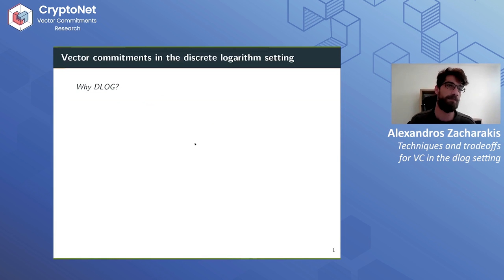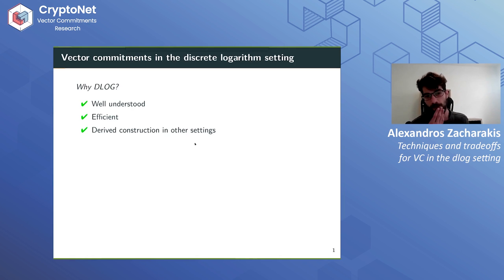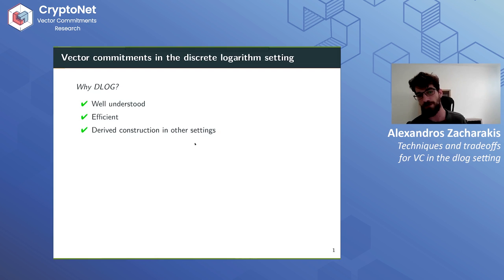First, let me try to motivate why we care about the discrete logarithm setting. For one thing, it's a very well understood, well studied, and widely used setting. It's more efficient than other settings, notably the pairing setting. The good thing is that the improvements here generalize easily, because there are so few tools we can use — you can get better results if you have some richer structure.